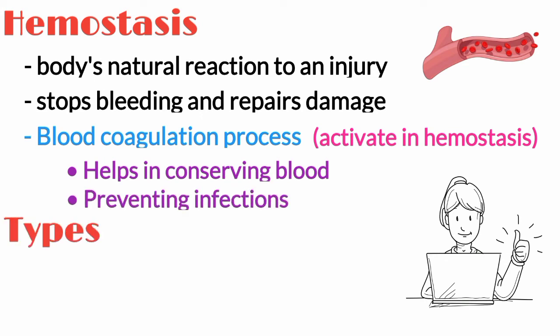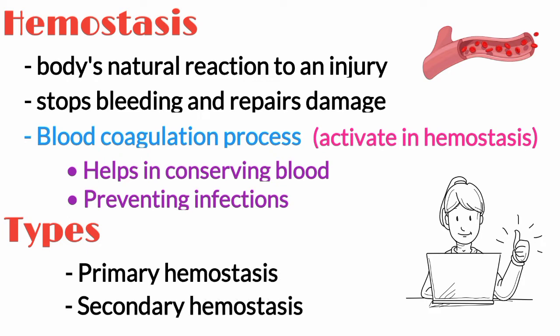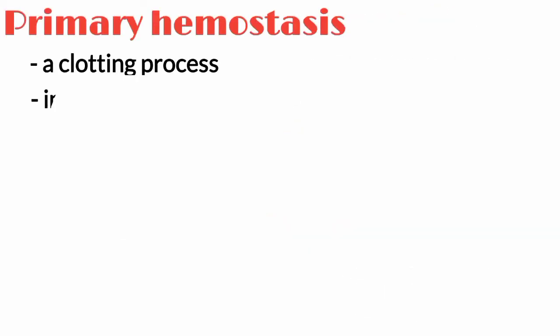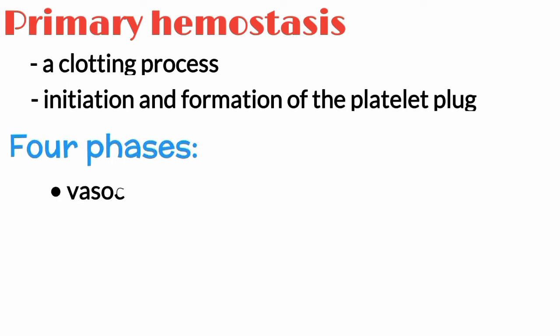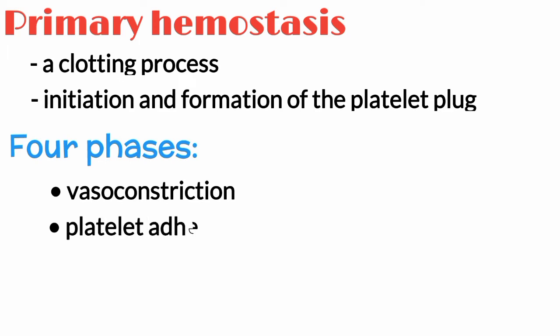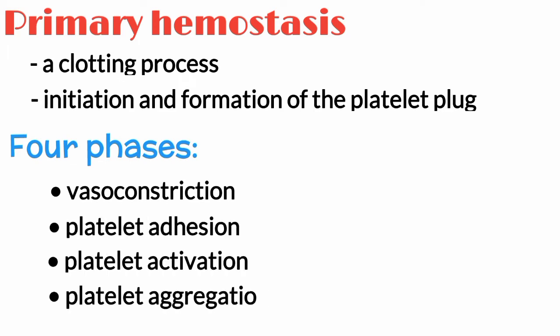There are two main types of hemostasis: Primary Hemostasis and Secondary Hemostasis. Primary Hemostasis is a clotting process that occurs due to the initiation and formation of the platelet plug. It is achieved in four phases: vasoconstriction, platelet adhesion, platelet activation, and platelet aggregation.